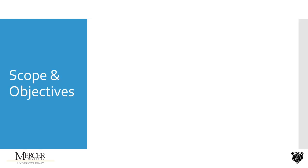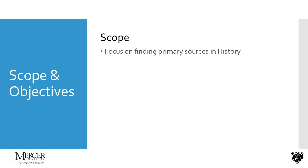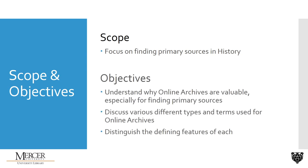To narrow this down a bit more, I want to talk about the scope and objectives for this video. Our scope is primarily focused on finding primary sources for history research. However, online archives can be used for a whole lot more than just history, so even if you are in other disciplines or have other objectives, this video can still be relevant to you. By the end of the video you should understand why online archives are a valuable tool, especially for finding primary sources for historical research. And because I can't show you every single archive out there, we'll discuss the various types of online archives and the terms used to refer to them, and you should be able to distinguish the common features of these different types of archives.